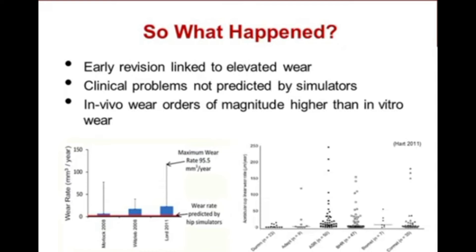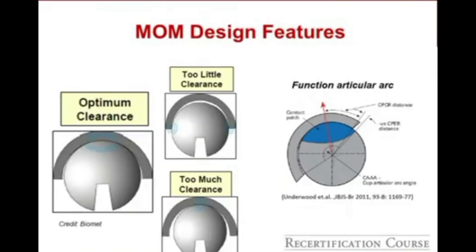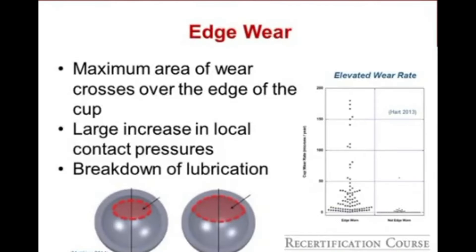Clinical wear was substantially higher than predicted by hip simulator studies. Important design features include clearance — too little causes the head to seize on the cup; too much leads to polar contact. Edge wear occurs when the maximum wear area crosses the edge of the cup, leading to increased local contact pressures, increased wear, and breakdown of lubrication. Retrieval studies of failed hip replacements with high wear rates showed clear evidence of edge wear.